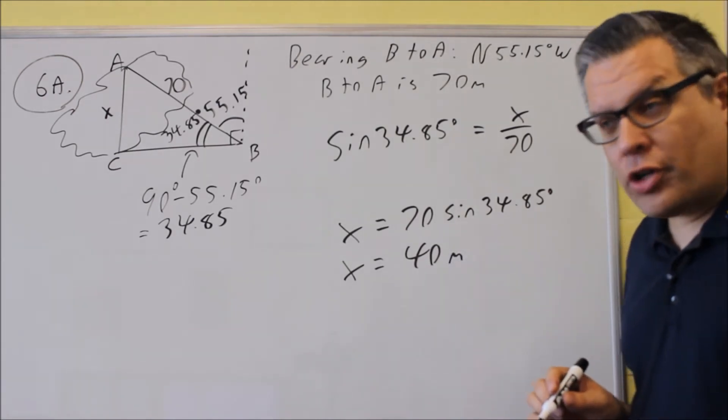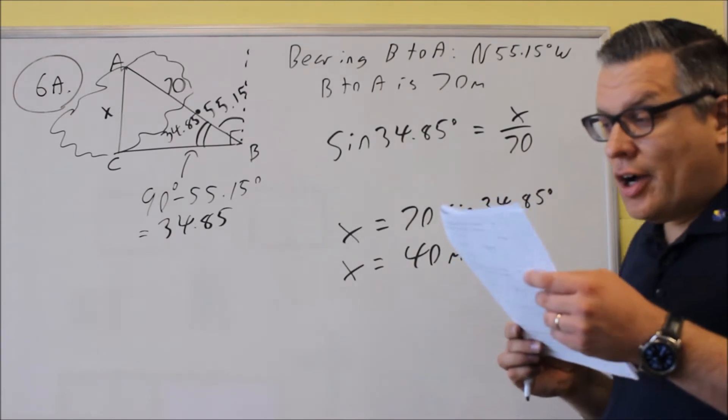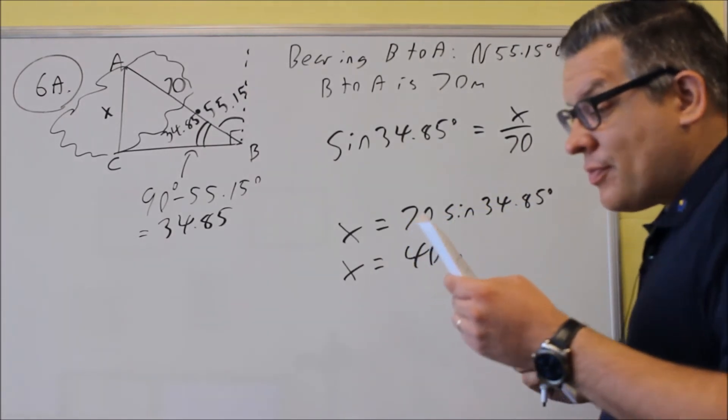And so that's what it would be. It would be 40. So that's the first thing that they ask for. They ask for the distance from A to C.